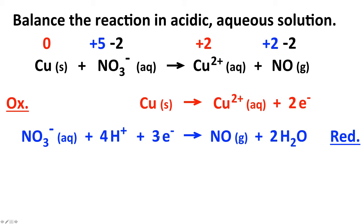Note that to balance charge, we always add electrons (negative charge) to whichever side needs it. Also, the oxidation half-reaction has electrons on the right, and the reduction half-reaction has electrons on the left — this should always be the case. We can also verify using oxidation numbers: nitrogen went from plus five to plus two, a decrease of three, confirming three electrons are gained.